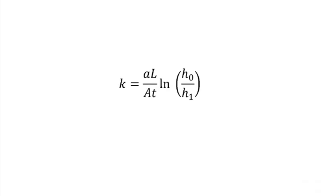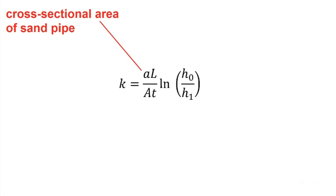This is the equation for the coefficient of permeability when performing the falling head test. Lowercase a is the cross-sectional area of the stand pipe. The internal diameter is given to us as 6.6 millimeters. From this, we get the area.